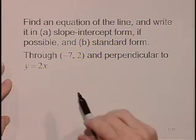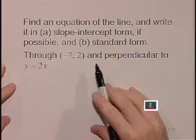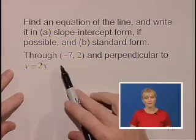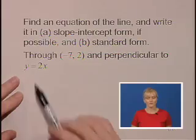Let's find an equation of the line and write it in (a) slope-intercept form if possible, and (b) standard form, through the point (-7, 2) and perpendicular to the line y = 2x.